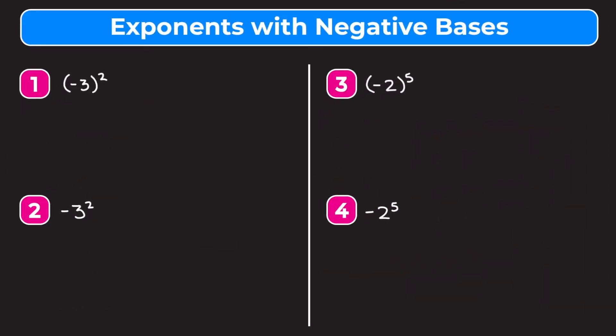In this video we're learning how to evaluate exponents that have negative bases. Let's take a look at example 1, which is negative 3 raised to the second. We notice that the negative 3 is in parentheses and then we have this squared or second exponent outside.